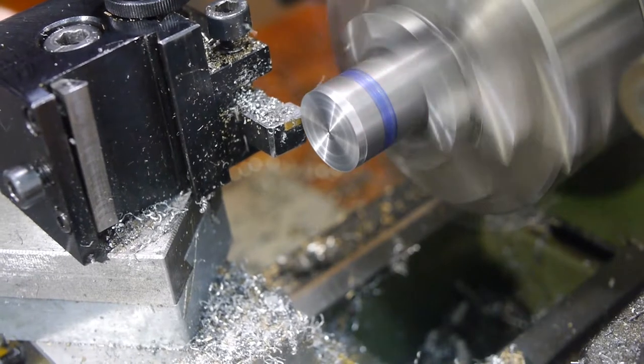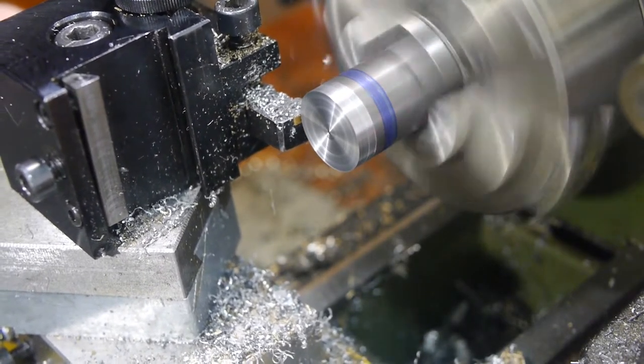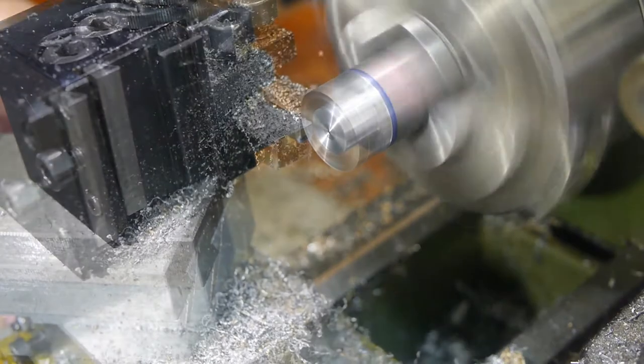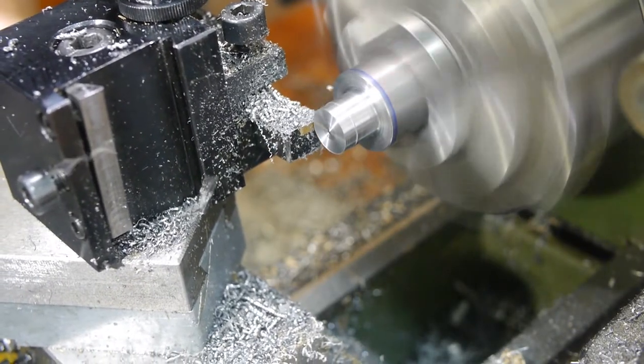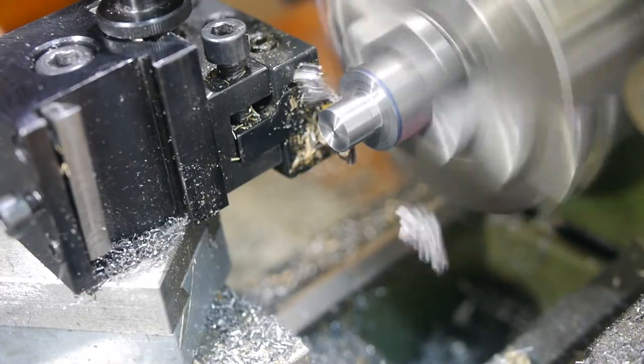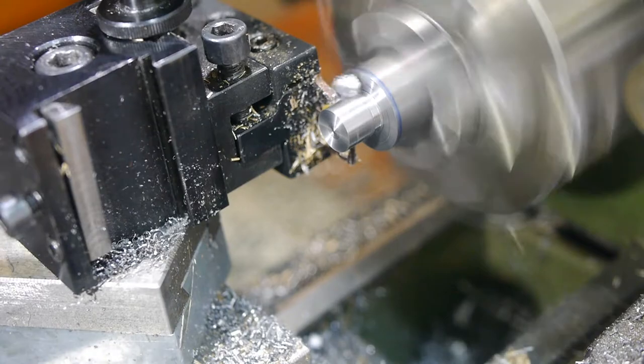First thread I turned was an M10. I used the same technique for all the external threads, feeding the single point tool away from the chuck with the spindle in reverse. Check out Joe Przinski's video on this threading technique. The technique is not only much safer, but can also cut more cleanly due to the higher RPM.